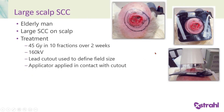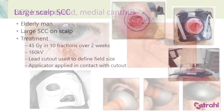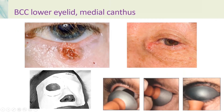This is an elderly man with a large scalp squamous cell carcinoma, treated with a predefined lead cutout with 45 Gy in 10 fractions. The cutout was used to define the field size and the applicator was applied in contact with the cutout. These are also a couple of pictures of basal cell carcinomas — one on the lower eyelid and one on the medial canthus — which are very treatable with kilovoltage photons, with the insertion of an internal eye shield and a lead mask.